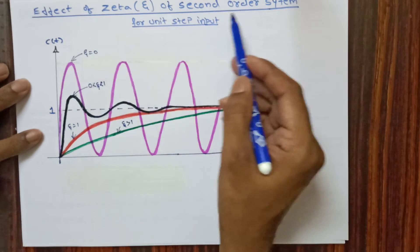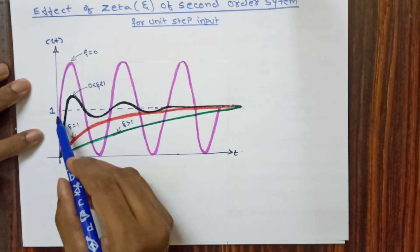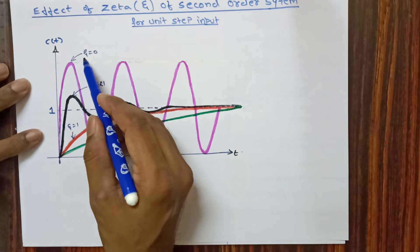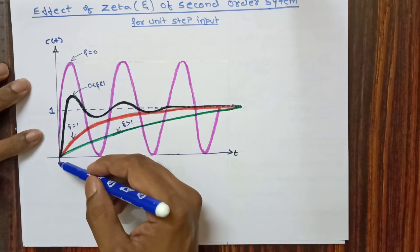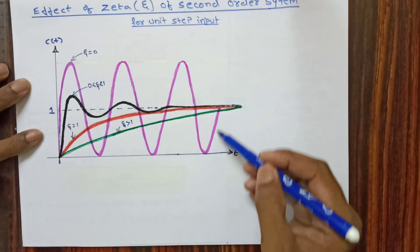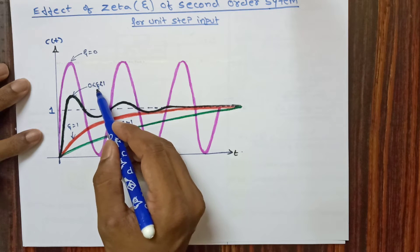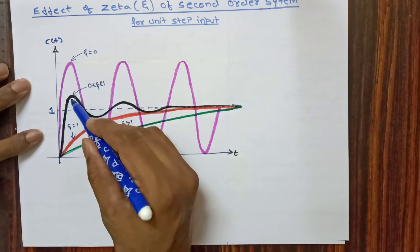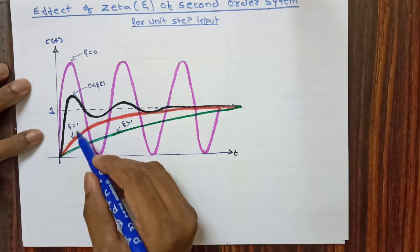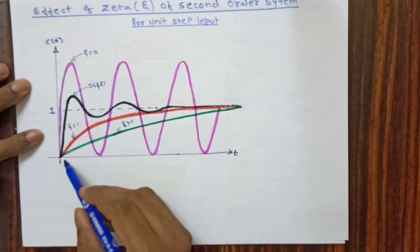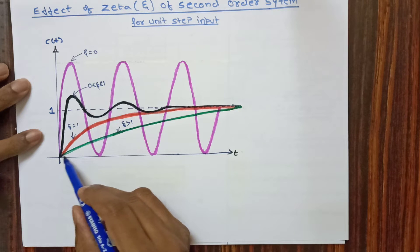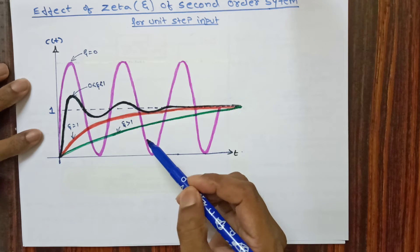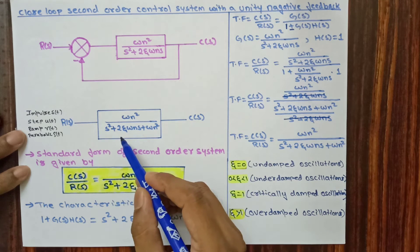For unit step input, we can see different output responses for different zeta values. For zeta=0 we get undamped oscillations. As zeta increases between 0 and 1, we get underdamped oscillations where the oscillations are dying out. For zeta=1 we get critically damped oscillation, and for zeta greater than 1 we get overdamped oscillation with a sluggish output.